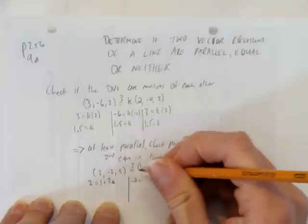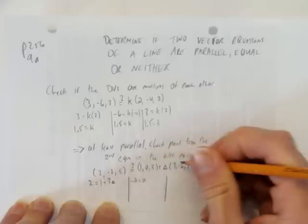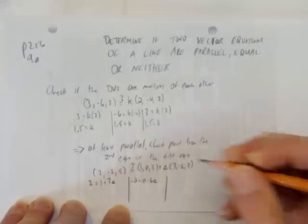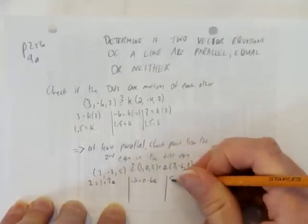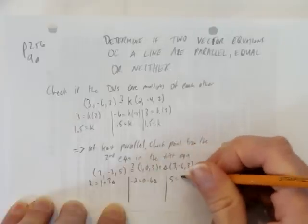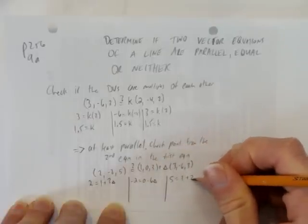negative 2, be made from 0 minus 6S? And it has to be the same S every time. And finally, can 5 be made from 3 plus 3S?